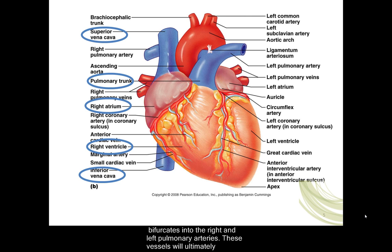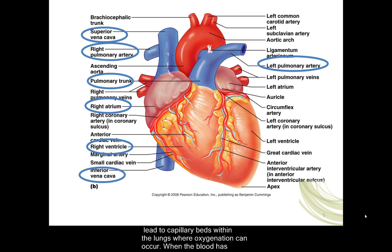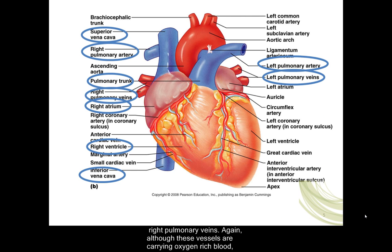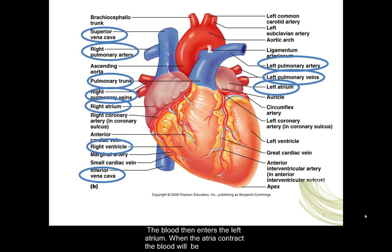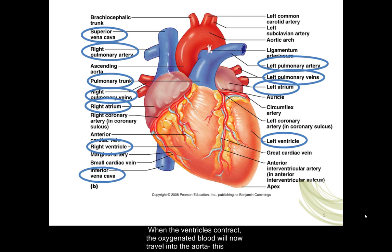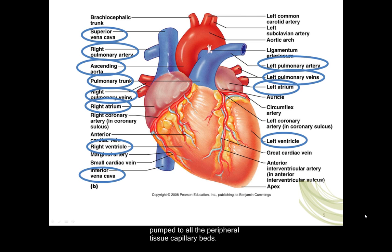The pulmonary trunk bifurcates into the right and left pulmonary arteries, which ultimately lead to capillary beds within the lungs where oxygenation can occur. When the blood has become fully saturated with oxygen, it returns to the heart using the left and right pulmonary veins. Although these vessels are carrying oxygen-rich blood, they carry blood back toward the heart and are therefore veins. The blood then enters the left atrium. When the atria contract, blood is pumped through the left atrioventricular valve into the left ventricle. When the ventricles contract, the oxygenated blood travels into the aorta, which is the beginning of the systemic circuit, and the oxygenated blood is pumped to all the peripheral tissue capillary beds.